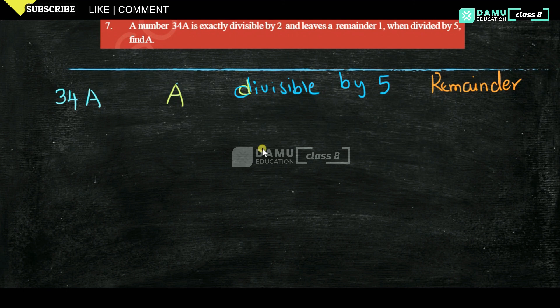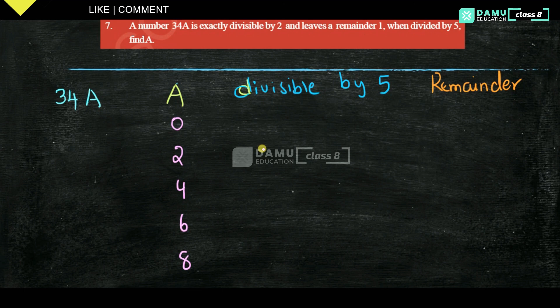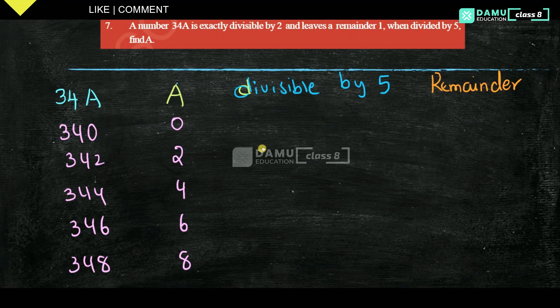Seventh question: the number 34A is exactly divisible by 2 and leaves a remainder of 1 when divided by 5. Find A. For divisibility by 2, A must be 0, 2, 4, 6, or 8. So the possible numbers are 340, 342, 344, 346, and 348 — all divisible by 2.